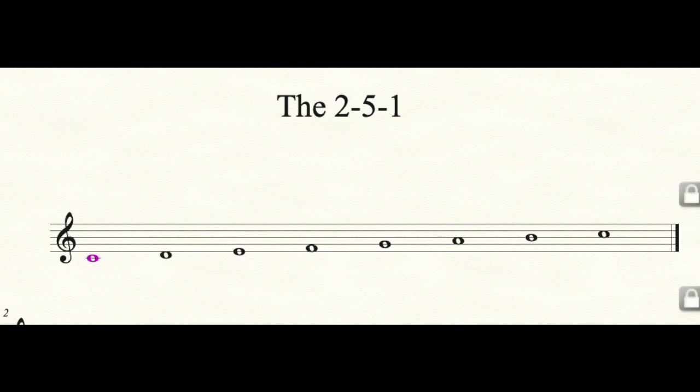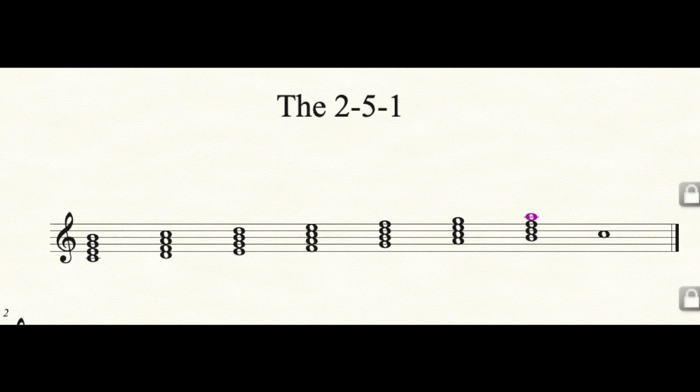Using notation software, we're going to harmonize the scale by putting stacks of thirds on each note. We're going to look at four-note chords — so there are four notes on D, then E, F, G, A, B, and then back to C again. Now we're going to label these.